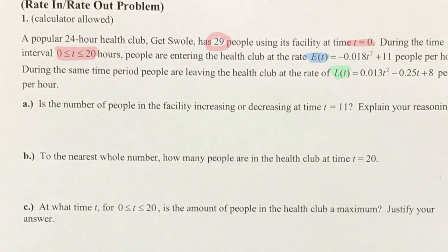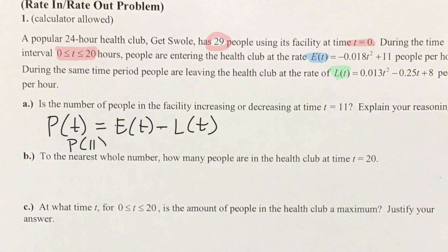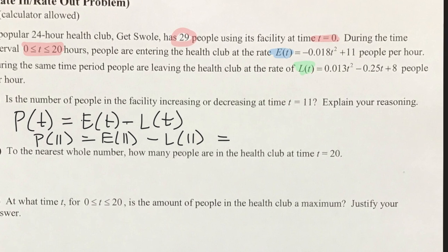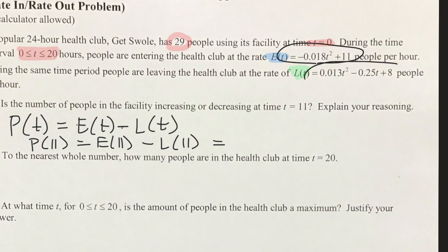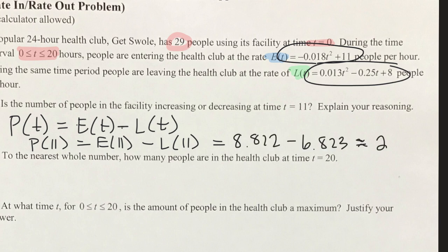Basically, are there more people coming in or more people going out? We set up an equation and plug t=11 into the entering equation and the leaving equation. If the result is positive, more people are entering than leaving; if negative, more people are leaving. The calculator gives 8.82 people entering and 6.8 leaving — an increase of about 2 — so the number of people is increasing.